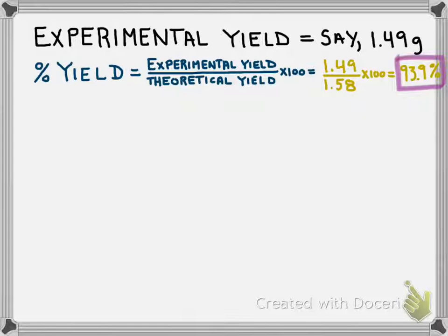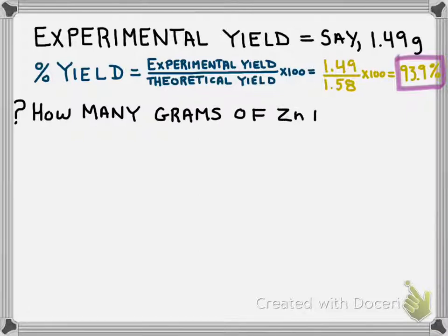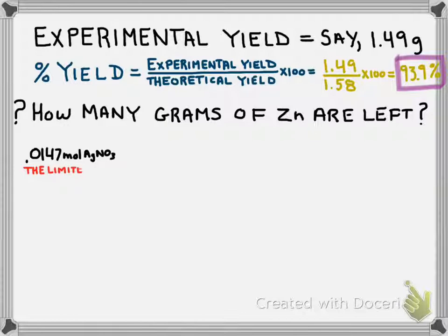All right. So, one last problem that could be asked on an example like this is how much of the zinc is left over. So, let's take a look at that. Remember that the zinc was added in excess, and we had limited amounts of silver nitrate. So, what we're going to do is take the amount of moles of silver nitrate that we had here, and that was the limited amount, because that's the one that controls everything that happens here, and we're going to do a mole ratio between the silver nitrate and the zinc.